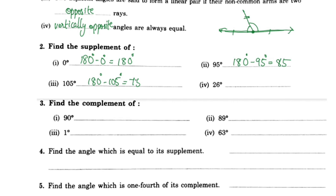The answer is 180 degrees. Now, find the complement of 90 degrees. For complementary angles, the sum is 90 degrees. Here you have an angle of 90 degrees, so the complement of 90 degrees is zero degrees.